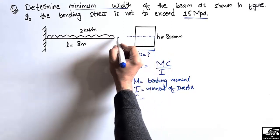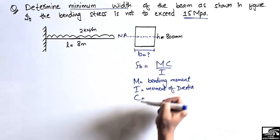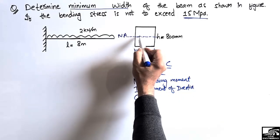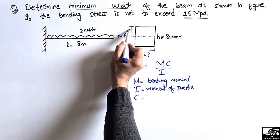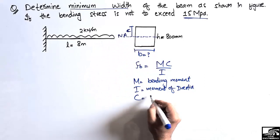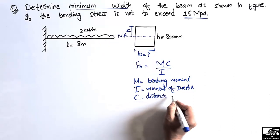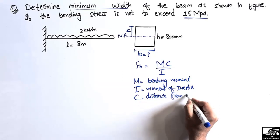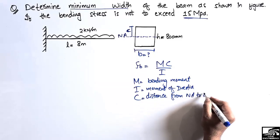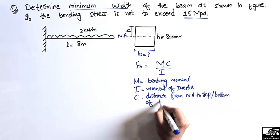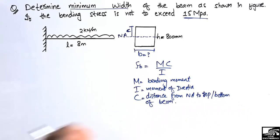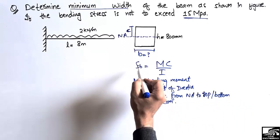If this is the neutral axis of the beam, then C is the distance from the neutral axis up to the top of the beam or to the bottom of the beam. So this distance is known as C. Fb is the bending stress.